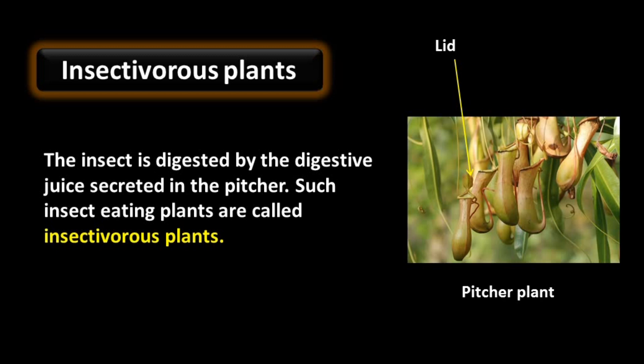Such insect-eating plants are called insectivorous plants. These plants are specially grown in land where the nitrogen level is very low, so they cannot prepare proteins.